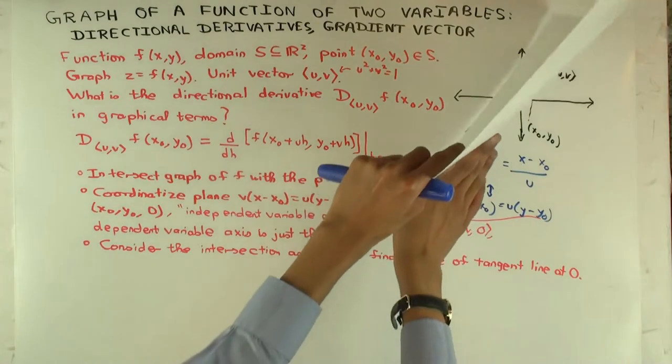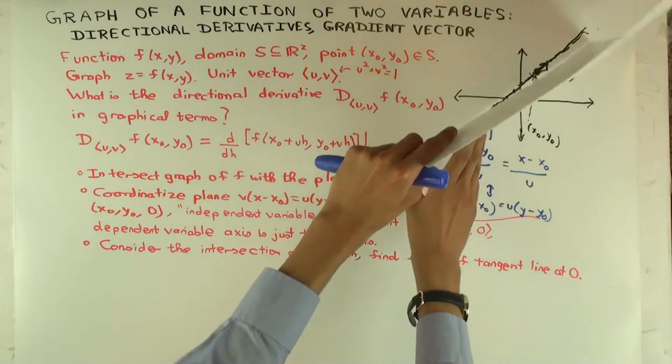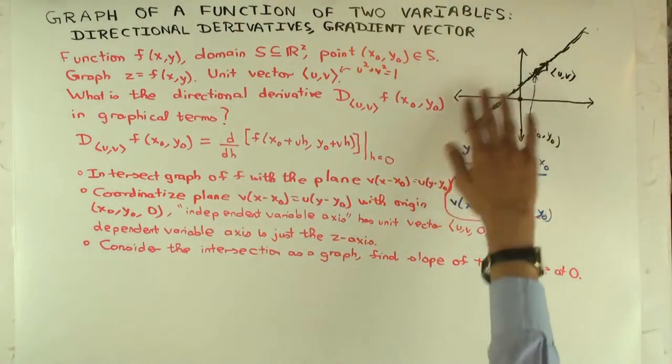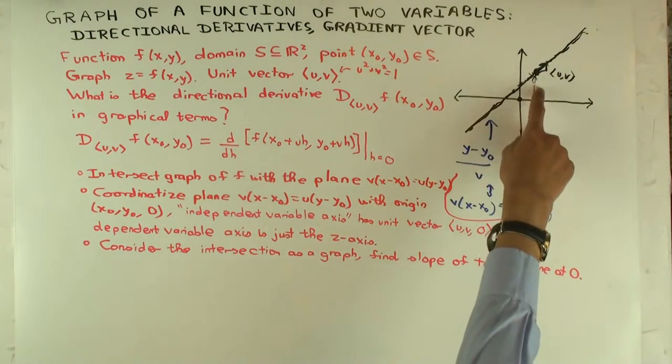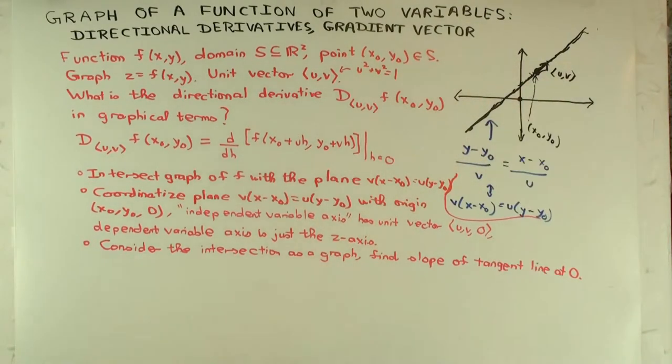You intersect it with the plane. What plane did we pick? Well, we picked the plane which we just look at the intersection with the x-y plane. That's this line which passes through the point (x₀,y₀) and is in the direction of the unit vector u. So we intersect the graph with this plane.